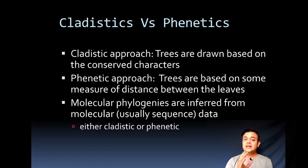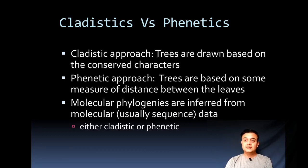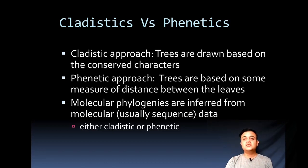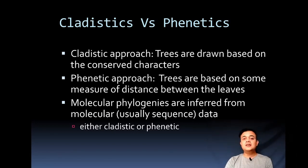In the cladistic approach, trees are drawn based on conserved characters. You must determine whether a character is really conserved or not, and only conserved characters are used for constructing cladistic trees. In contrast, the phenetic approach builds trees based on some measure of the distance between taxa — based only on the current state of affairs, current similarity, or morphological state.